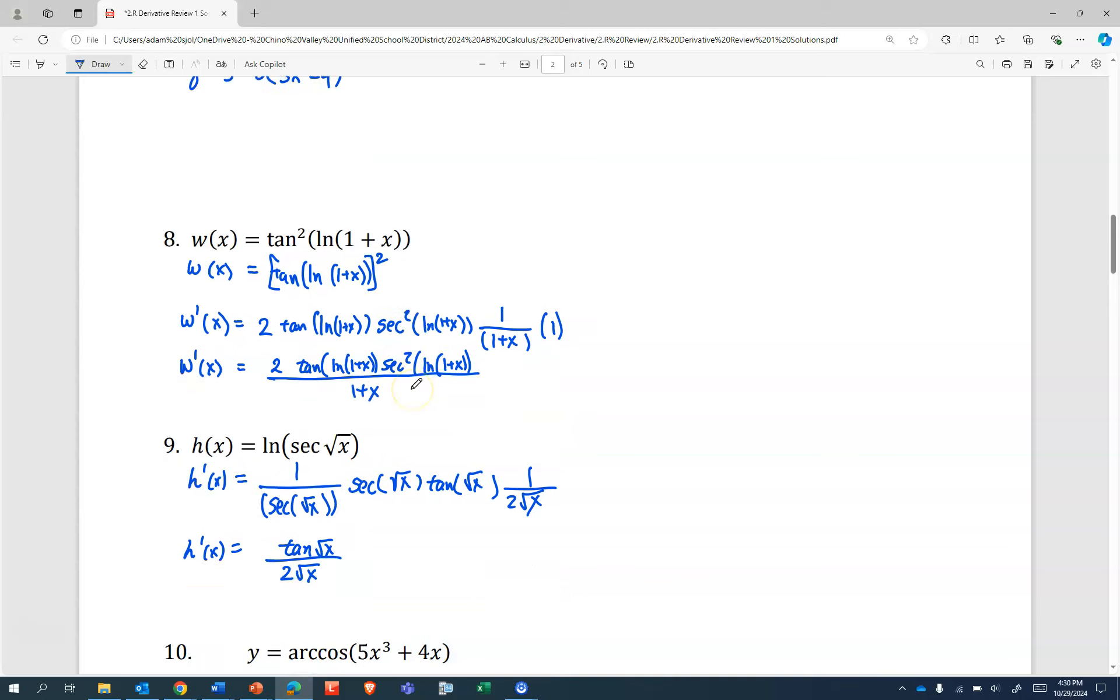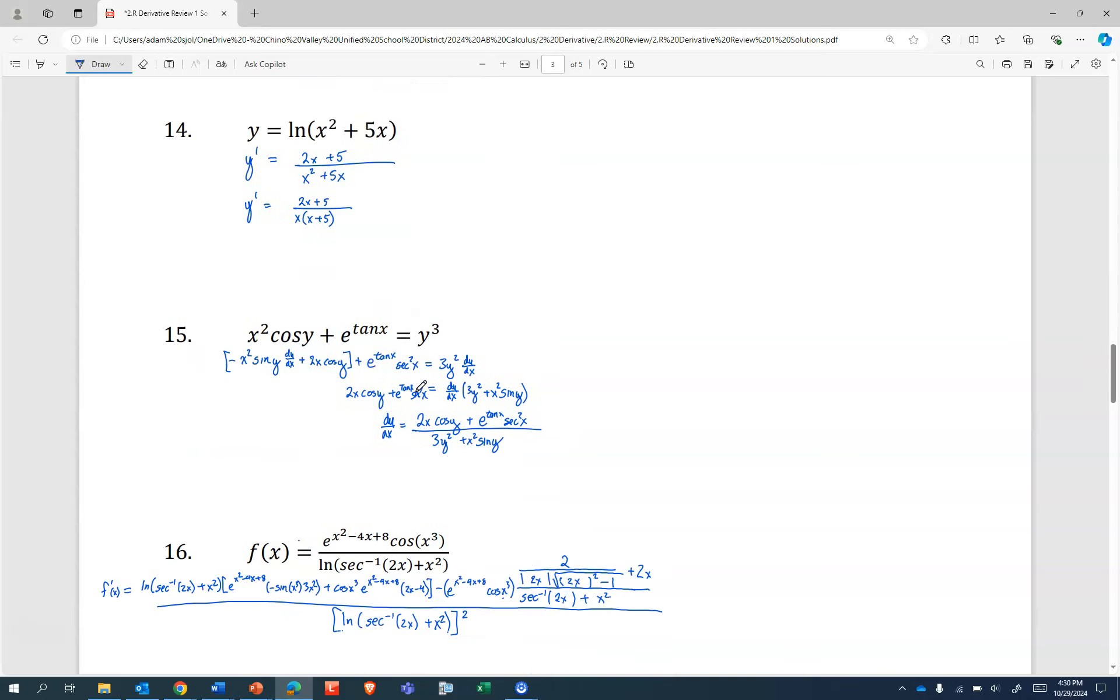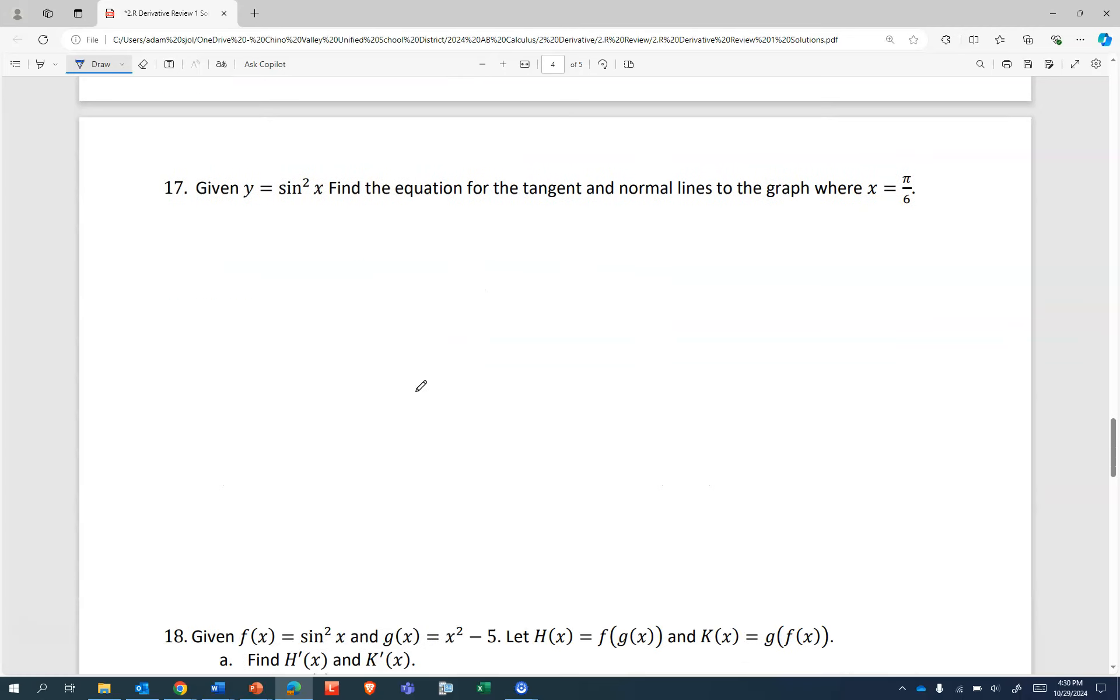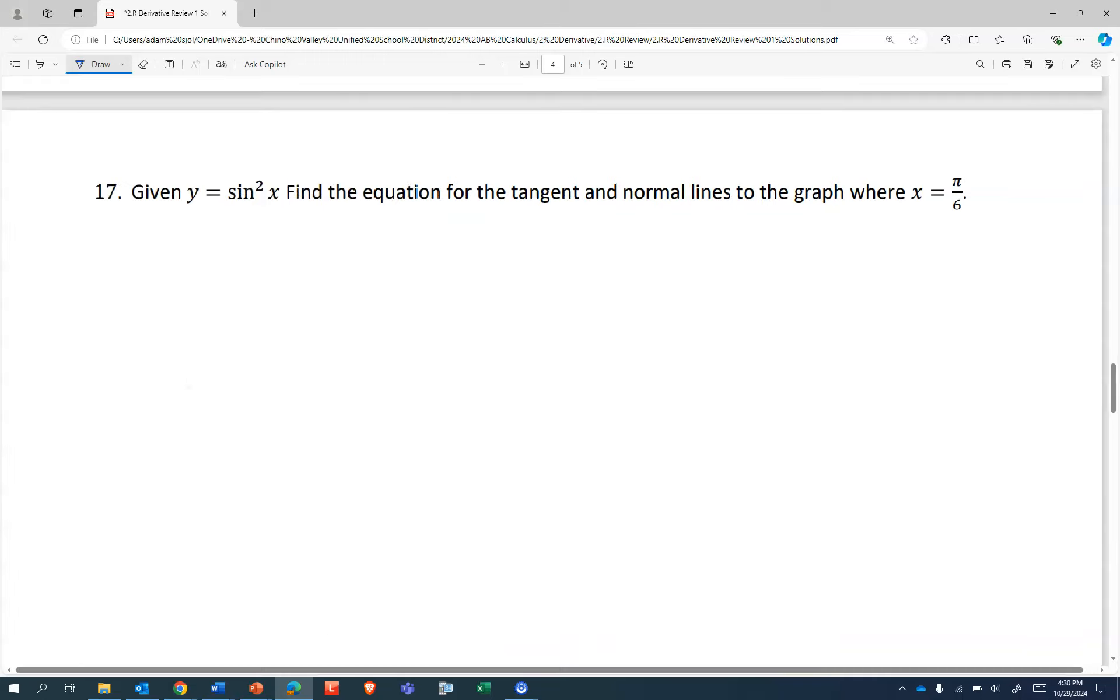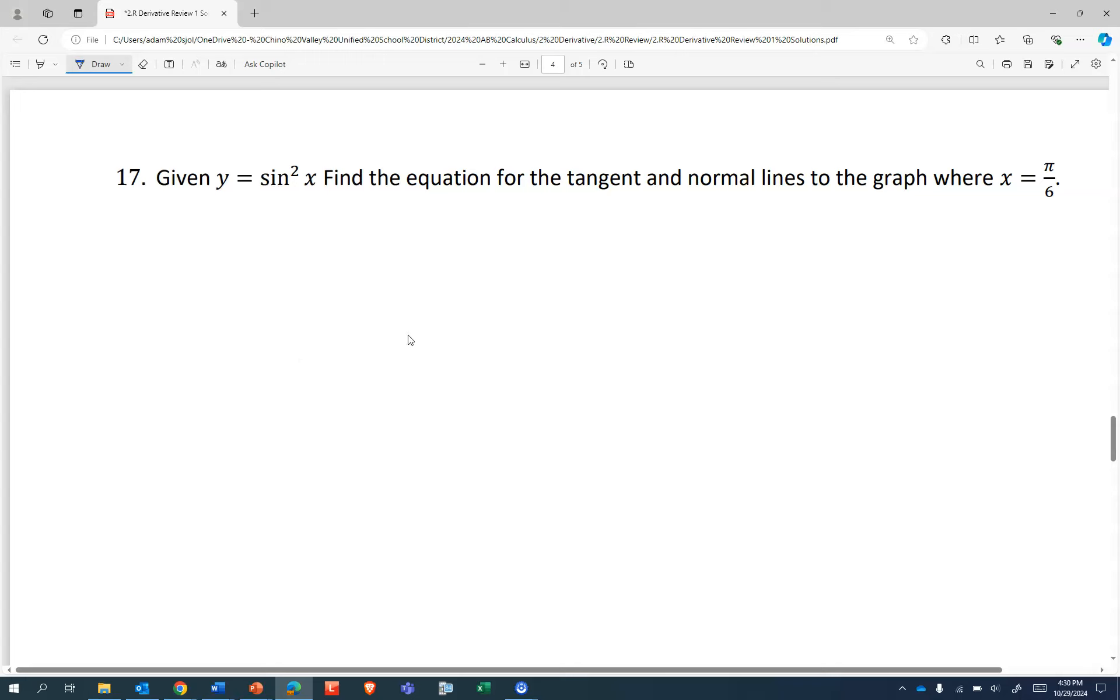Number eight is just kind of silly. Hopefully you're ready and could dissect those. So we need to be able to find the equation for the tangent and normal lines to the graph where x equals π/6. I suppose first maybe we should do, we're going to need a y value. When x equals π/6, y equals sin(π/6) squared.